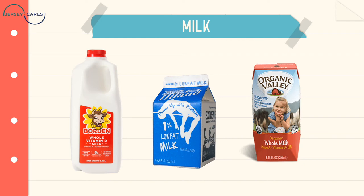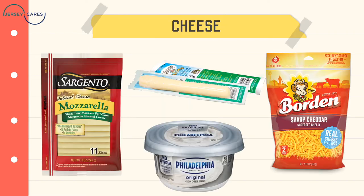Next we have cheese. On this slide we're showing mozzarella string cheese, sharp cheddar, and cream cheese, which a lot of people have on a bagel — and that would include our grains group as well.